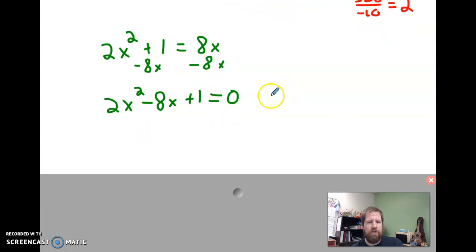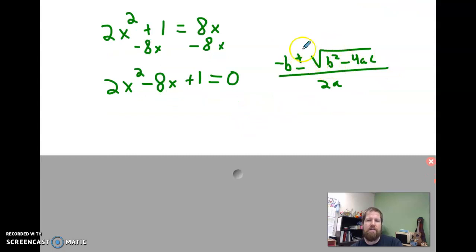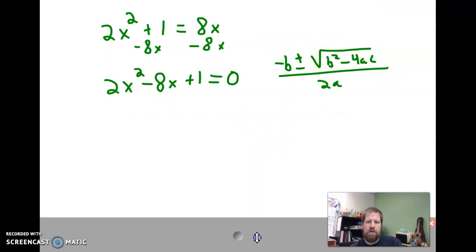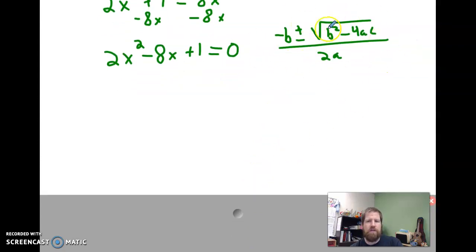Now I can plug it into my quadratic formula, which is negative b plus or minus the square root of b squared minus 4ac all over 2a. It is good to memorize that. If you have to look it up every time, it'll be hard. And when I went and observed at the high school, they did expect in Algebra 2 for students to have this memorized. Let's plug our values in. Again, I've got an a of 2, a b of negative 8, and a c of positive 1.